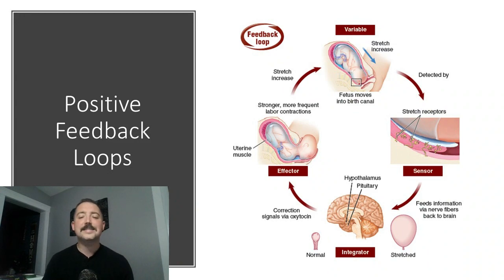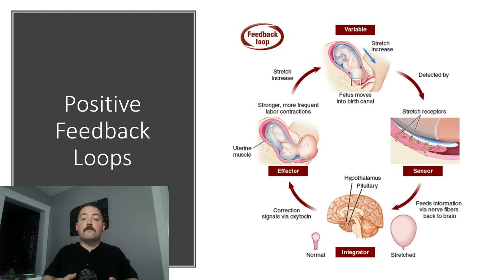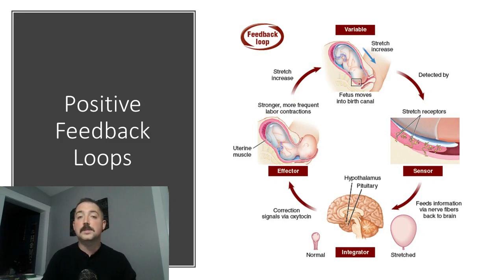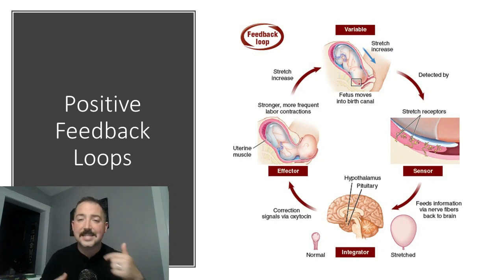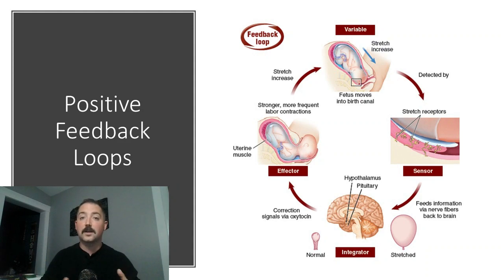Positive feedback loops are a little more rare. However, the best example would be a pregnant mom delivering a baby. Once the water breaks, the baby starts moving forward in the birth canal with the help of contractions from mom's muscles. The more forward the baby moves, the harder the contractions get. There's a sensor that tells the contractions to get stronger and stronger until the baby's out. Once the baby's out, the contractions stop altogether.